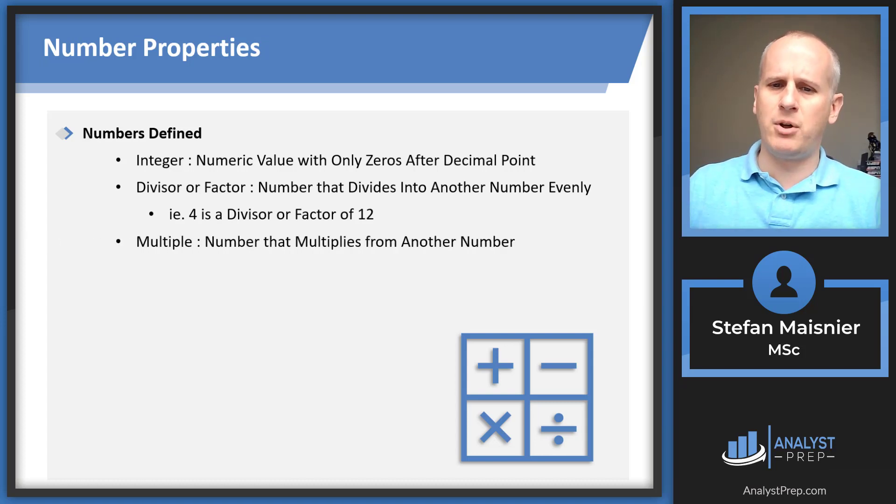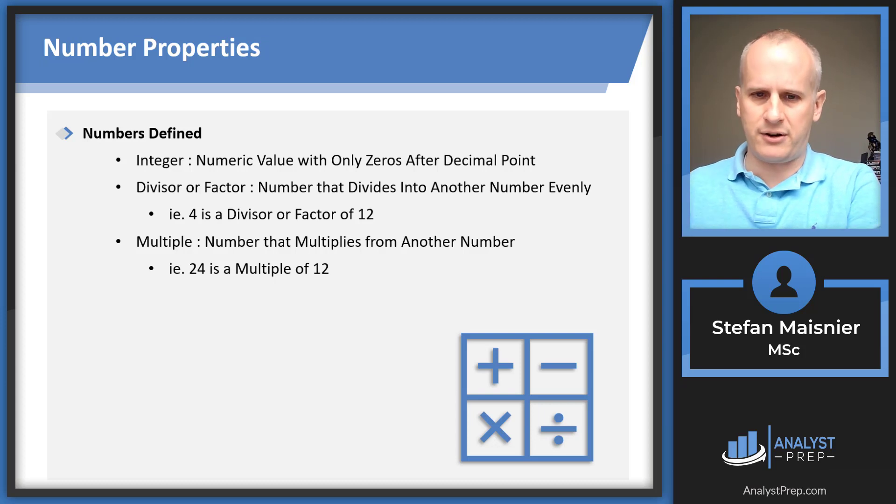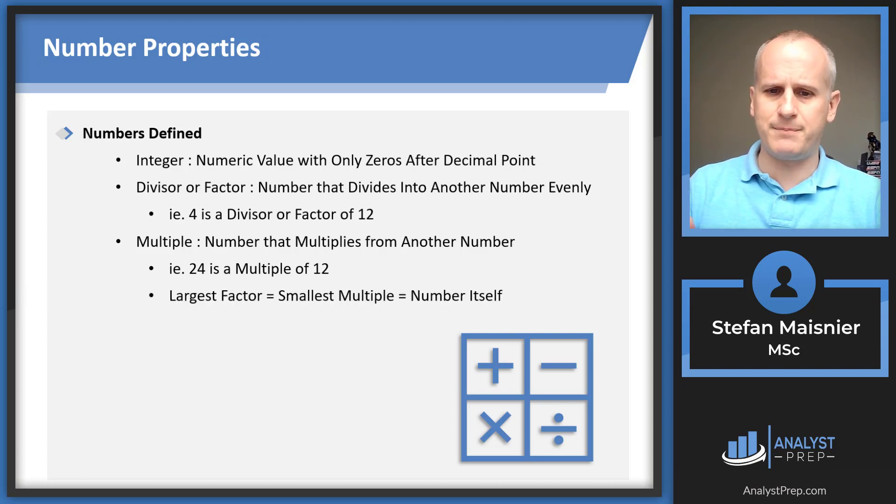A multiple, however, is a number that multiplies from another number. Using the value of 12 as our exemplar, 24 would be a multiple of 12. Generally the way to think about this in the most simplistic of terms is that factors or divisors are less than or equal to the number that you're testing and multiples are greater than or equal to the number that you're testing. And there's one overarching rule: your largest factor is going to be equal to the smallest multiple, which is equal to the number itself. So the largest factor of 12 is 12 itself. The smallest multiple of 12 is 12 itself.